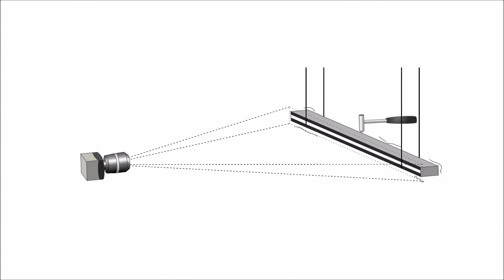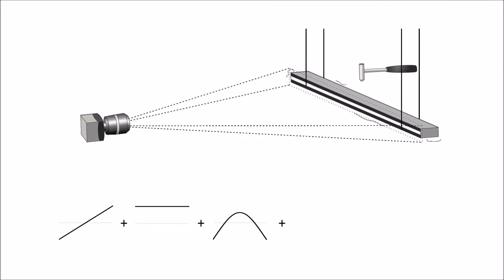When a structure vibrates, it flexes at different frequencies with different mode shapes. A beam will respond to an impact excitation by flexing with the following mode shapes, oscillating at different natural frequencies.